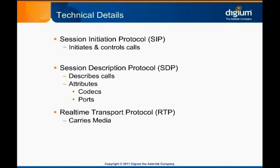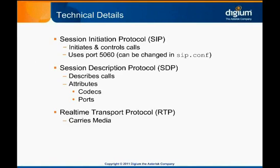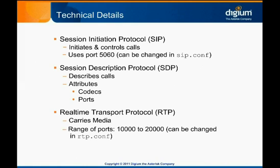The RTP ports used are negotiated in the SDP exchanges between SIP endpoints. SIP control traffic most often uses a single port 5060, which can be changed in SIP.conf for Asterisk. SIP requires different RTP ports for every concurrent stream, so a range of ports must be made available. The default port range in Asterisk for RTP media is set between ports 10,000 and 20,000, but this is configurable in RTP.conf.